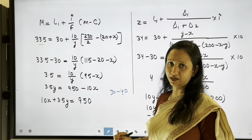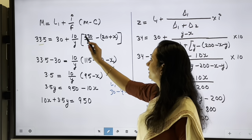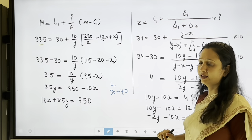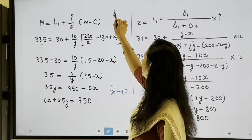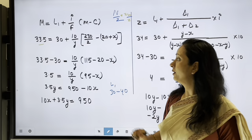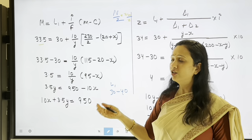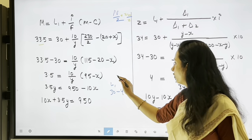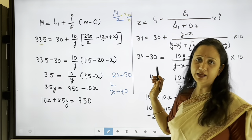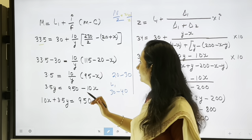So L1 = 30, the interval is 10. The frequency of the 32–40 group is Y. The formula uses N/2: N = 230, so N/2 = 115. Small m (C) is the cumulative frequency of the group before the median group. The median group is 32–40, so the preceding group is 22–30, whose cumulative frequency from the table is 20 plus x.